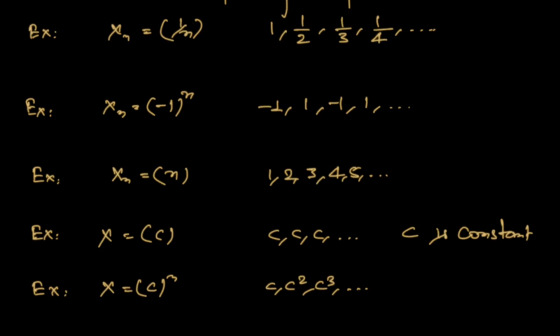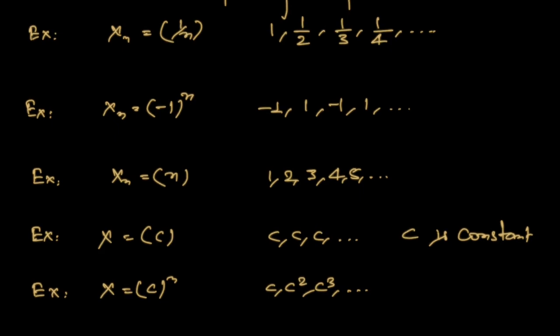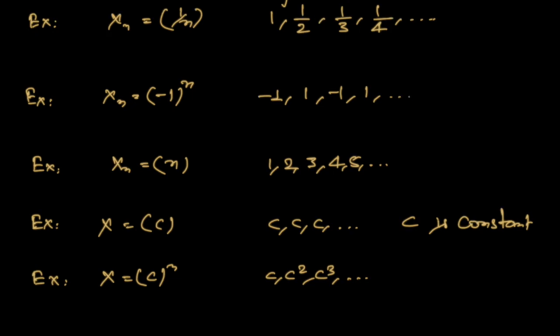Another example is the geometric sequence, which you can form by taking a number and raising it to successive powers. For example, if you take 2, the sequence will be 2, 2², 2³, and so on. Such sequences are called geometric sequences.